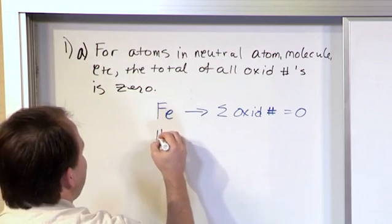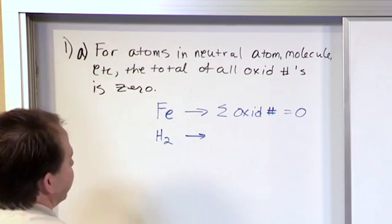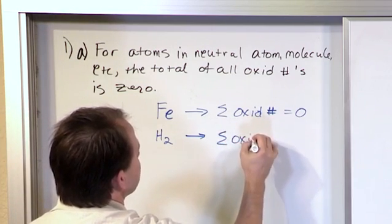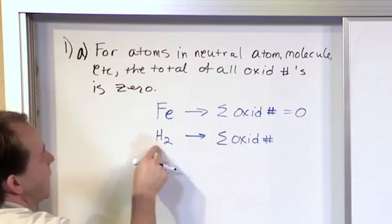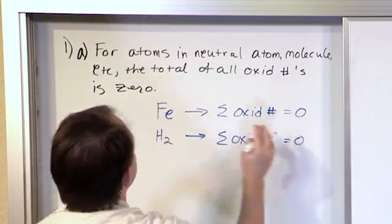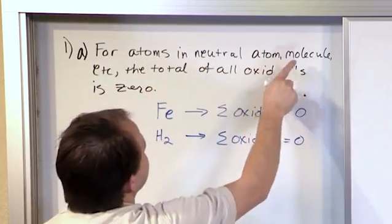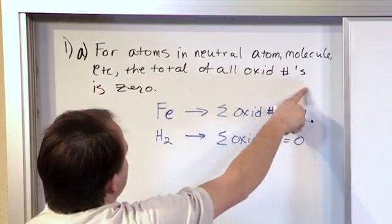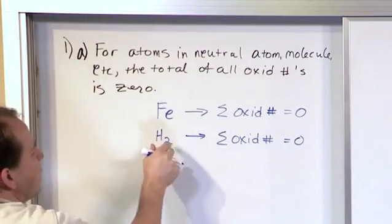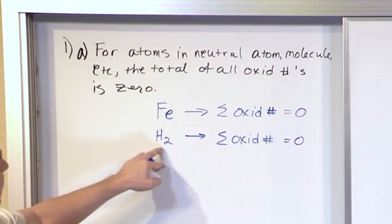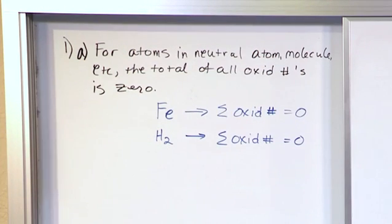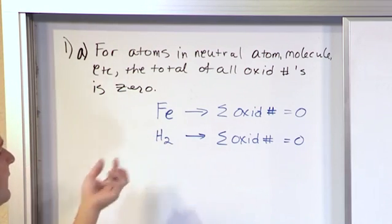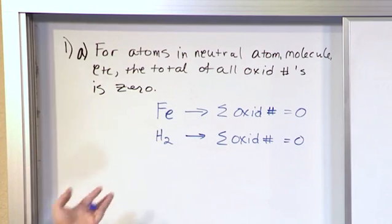All right, if you have hydrogen gas just sitting off by itself, floating in a balloon or something, you know that the sum of the oxidation numbers in this molecule here is zero, because it says for atoms in neutral atoms, molecules, et cetera, any kind of compound, anything, the total of all the oxidation numbers has to be zero. So that means that since the sum of these oxidation numbers are zero, it's basically implying, and since it's the same atom in there, it's basically implying that the oxidation number of this hydrogen is zero.